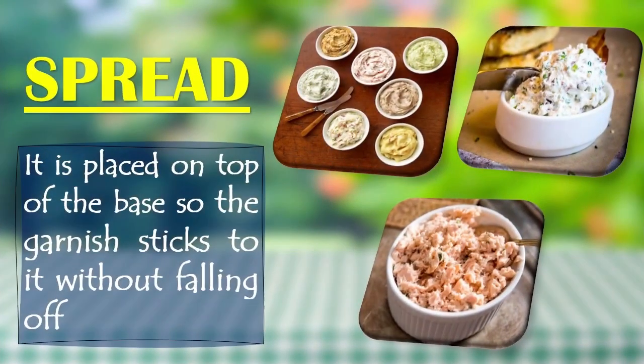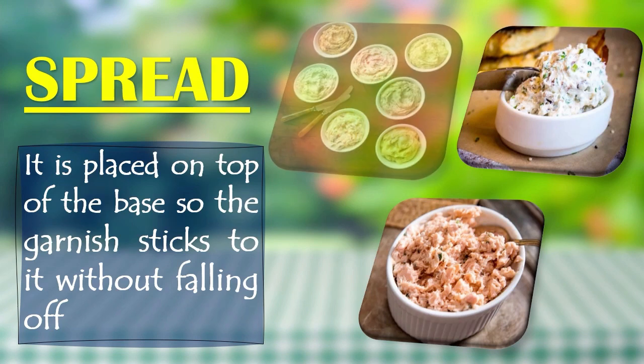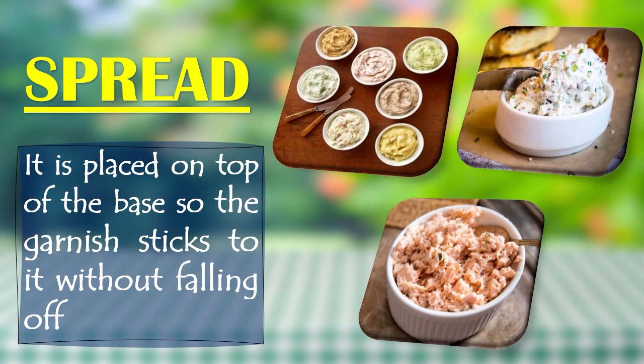The next part is the spread, which is placed on top of the base so the garnish stays without falling. There are three types of spreads. First is flavored butter, made from softened butter with flavorings. Second is flavored cream cheese, made like flavored butter but with cream cheese substituted for the butter — a mixture of cream and butter can also be used. Third is meat or fish salad spreads, made from finely chopped meat or fish that are spreadable. Seasoning should be checked carefully to make the spread more stimulating to the appetite.